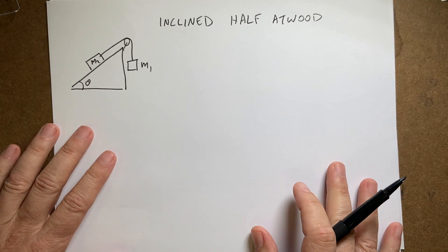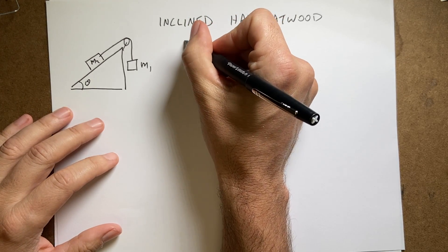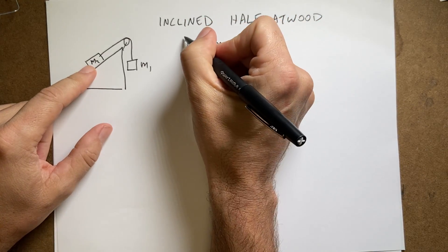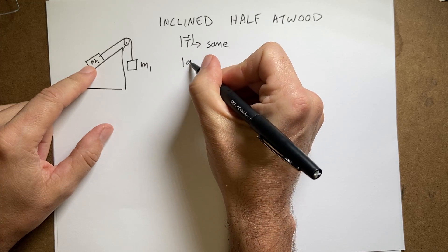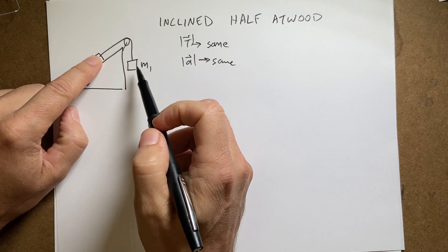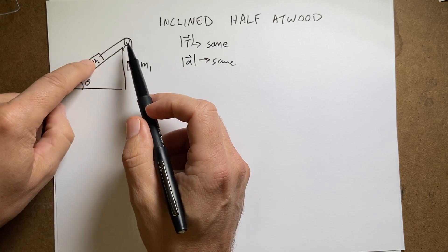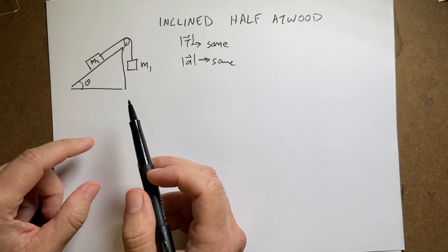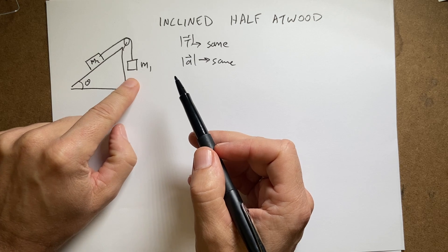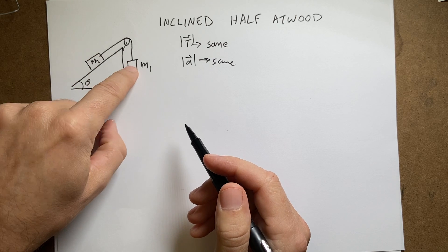We're going to do the same thing we did before. Number one: the magnitude of the tension on the two masses is the same, and the magnitude of the acceleration is the same. The tension is the same because it's the same rope — if the rope has no mass, the tension on one side equals the tension on the other. And if the rope doesn't stretch, if one side moves a centimeter, the other moves a centimeter in the same time, giving the same velocity and therefore the same acceleration.